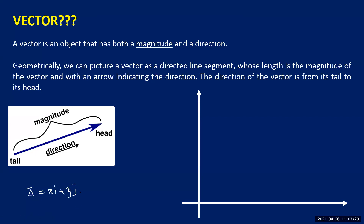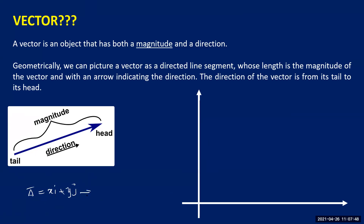When the vector is xi plus yj, x is the component of the vector in the i-direction, and y is the component of the vector in the j-direction. To represent this vector geometrically, we write only its components: x comma y.